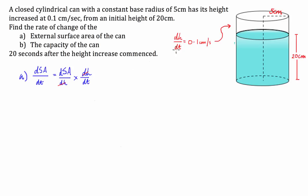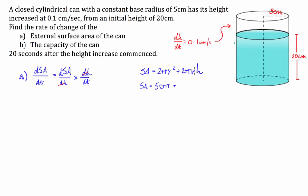Now we have to go about computing all these different things. We have the derivative of surface area with respect to height — first we need to work out what surface area is with respect to height. The surface area of a cylinder is equal to 2πr² + 2πrh. We know the radius is fixed at 5 centimetres, so surface area with respect to height is going to be 2π(25) + 2π(5)h, which gives us 50π + 10πh.